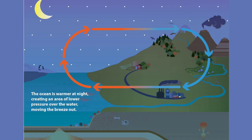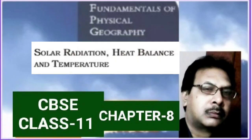So, the atmosphere mainly gets heated by the terrestrial radiation or the earth's radiation, and not by the incoming solar radiation or the insolation. This heat received by the earth through insolation is subsequently transferred to the atmosphere by the processes of conduction, convection, and advection.